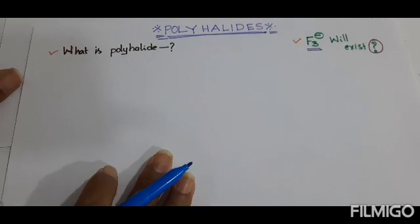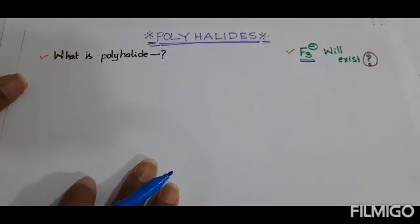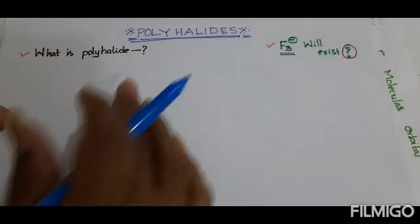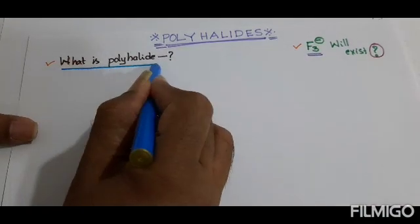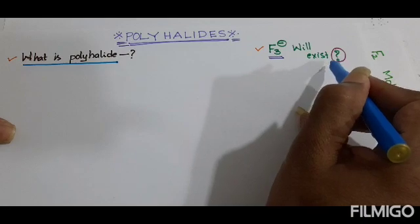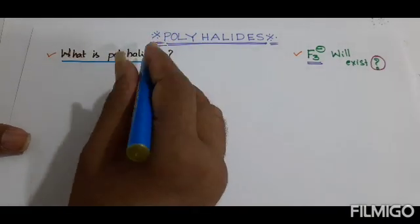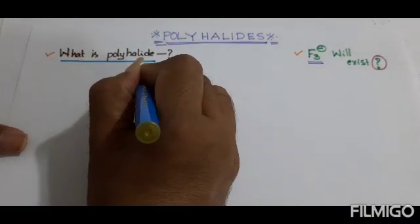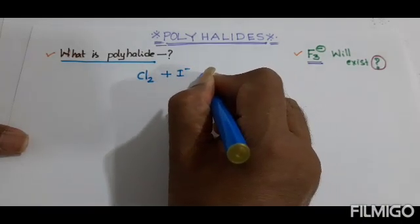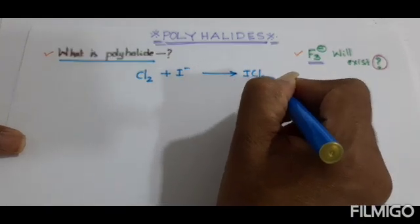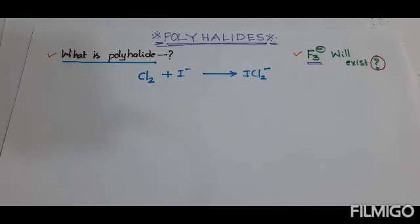Hello students, today we are taking polyhalides. What is a polyhalide? In this session we are going to discuss whether F3⁻ ion will exist. Generally, a halogen molecule like Cl2, when it combines with a halide ion, it forms a compound called a polyhalide — that means containing more than one type of halogen, or sometimes more than two halogen atoms.